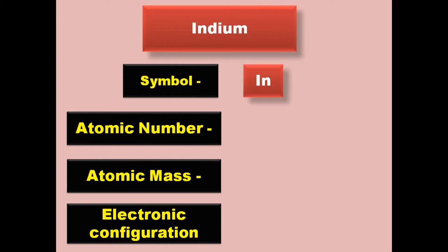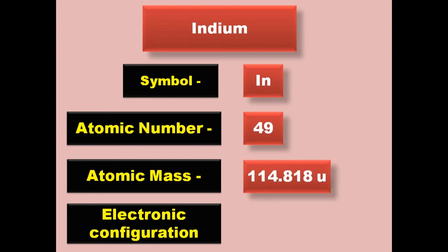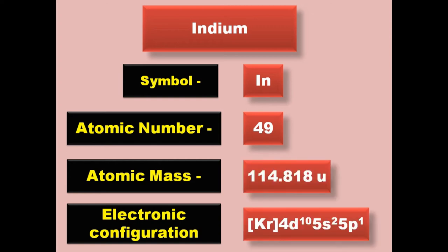Indium has symbol In, atomic number 49, atomic mass 114.818, electronic configuration [Kr] 4d10 5s2 5p1. Indium is a post-transition metal and exists in solid form at room temperature.